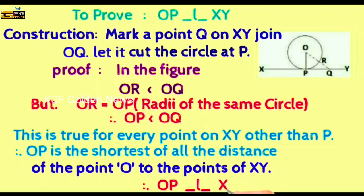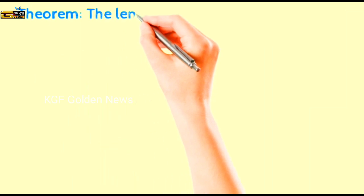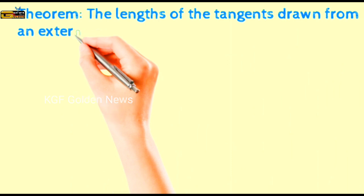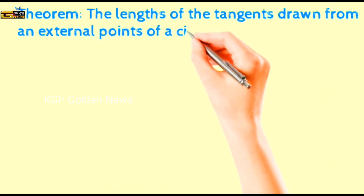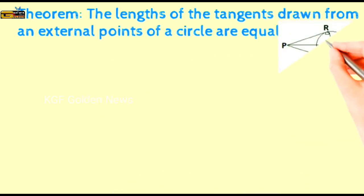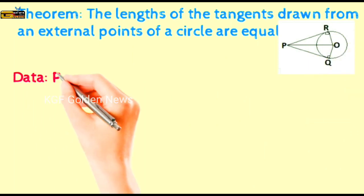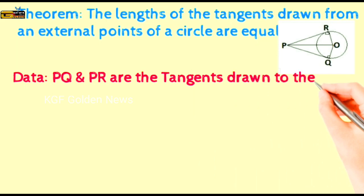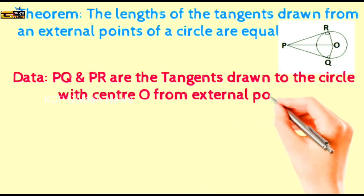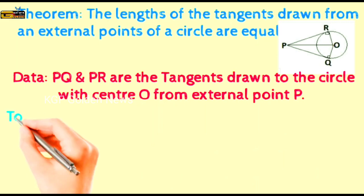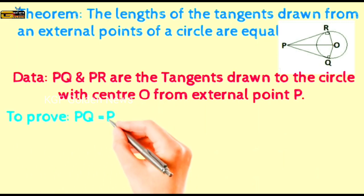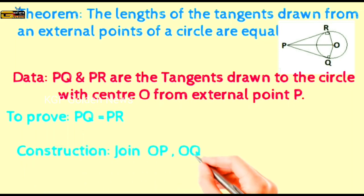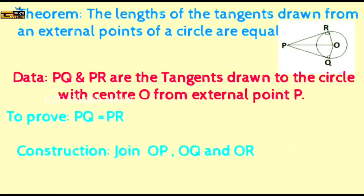Theorem: The lengths of the tangents drawn from an external point of a circle are equal. Data: PQ and PR are the tangents drawn to the circle with center O from an external point P. To prove, PQ equal to PR. Construction: Join OP, OQ and OR.